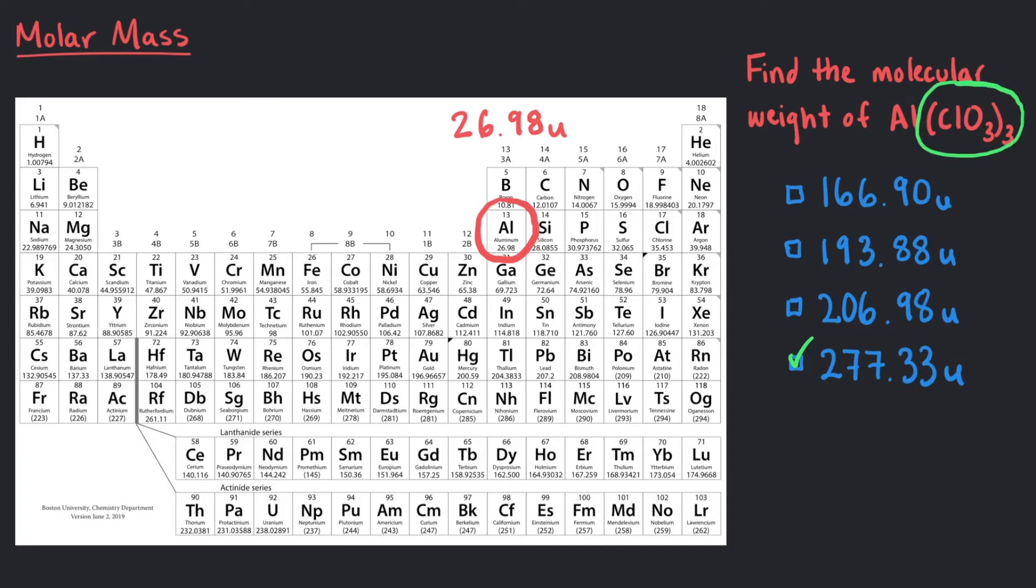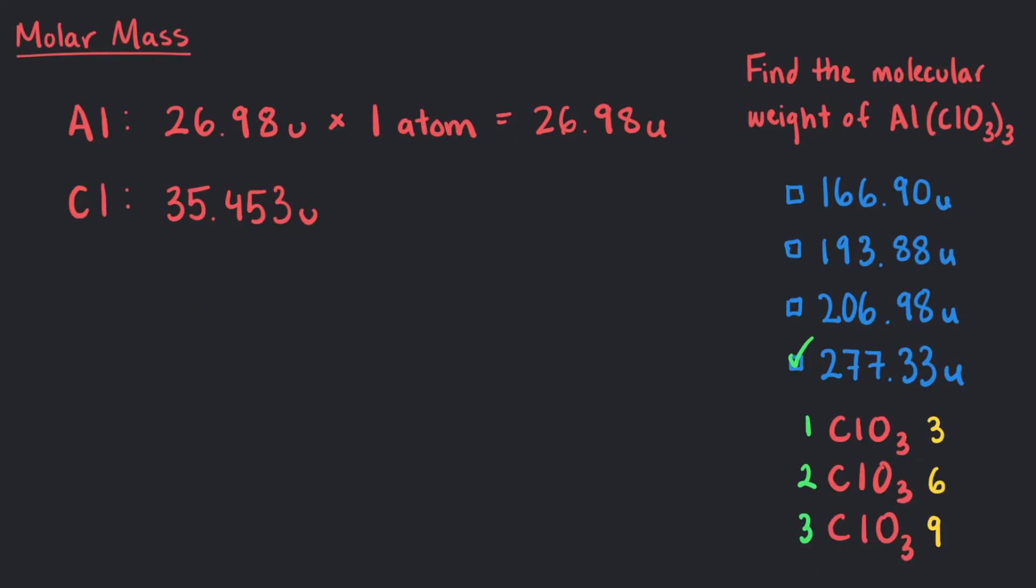The second half of this formula means that there are 3 ClO3 units. So there are 3 Cl atoms and 9 Oxygen atoms. Each Cl atom has an average atomic weight of 35.453U. So 35.453U times 3 Cl atoms gives us 106.35U.